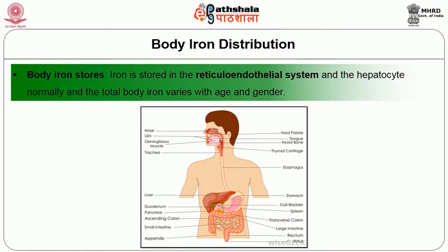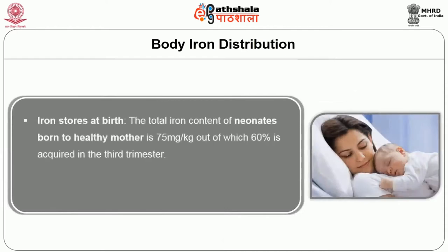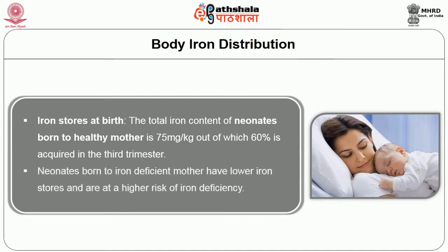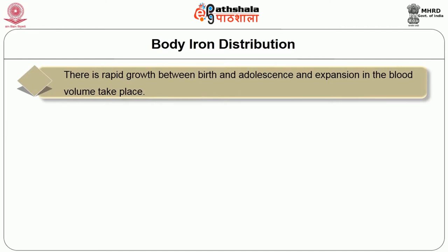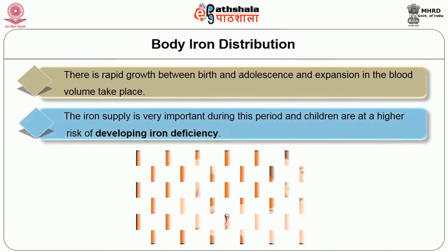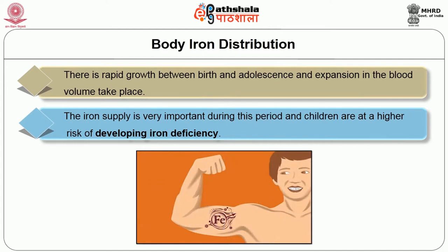Iron is stored in the reticuloendothelial system and the hepatocyte, and total body iron varies with age and gender. Iron stores at birth — neonates have around 75 milligram per kg, out of which 60 percent is acquired in the third trimester. Neonates born to iron-deficient mothers have lower iron stores and are at higher risk of iron deficiency. There is rapid growth between birth and adolescence, and blood volume increases during this time, making children at higher risk of developing iron deficiency.